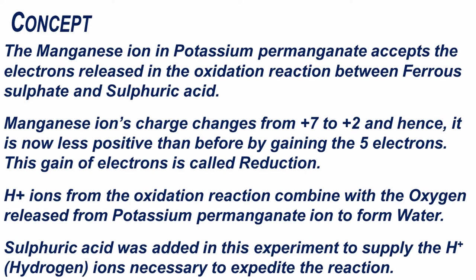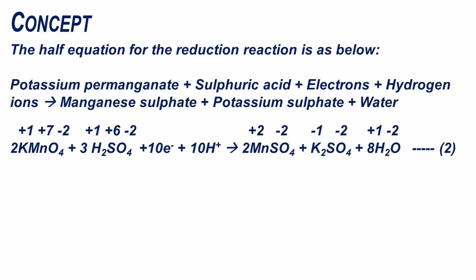H⁺ ions from the oxidation reaction combine with the oxygen released from the permanganate ion to form water. Sulfuric acid was added to supply the H⁺ ions necessary to expedite the reaction. The half-equation for the reduction reaction is: 2 KMnO₄ + 3 H₂SO₄ + 10e⁻ + 10 H⁺ → 2 MnSO₄ + K₂SO₄ + 8 H₂O.